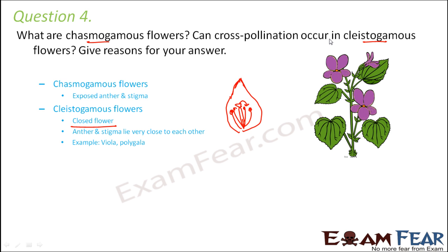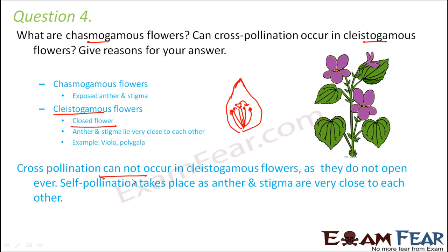Can cross-pollination occur in cleistogamous flowers? In cleistogamous flowers the flowers are always closed, so the anthers and stigma are not exposed. For cross-pollination, pollinating agents need to carry pollen grains from the anther of one flower to another plant's flower. A pollinating agent can only carry pollen grains when the anthers are exposed; when they are inside a closed flower there is no way they can be carried away. So cross-pollination cannot occur in cleistogamous flowers. Instead, self-pollination takes place very easily because the pollen grains are very close to the stigma.